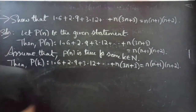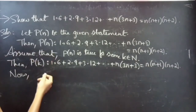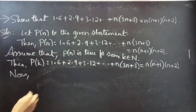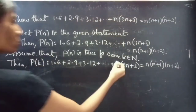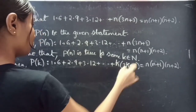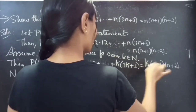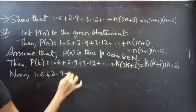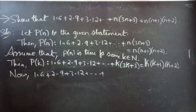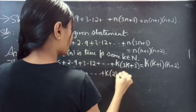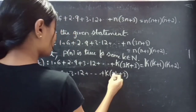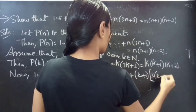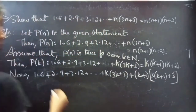Since P(k) holds, we will now prove for k plus 1 — that is, for n equals to k plus 1. Consider k plus 1 terms. The sum 1 into 6 plus 2 into 9 plus 3 into 12 plus the kth term k into 3k plus 3, plus the k plus 1 term which is k plus 1 into 3 times k plus 1 plus 3.